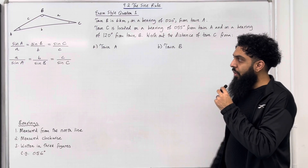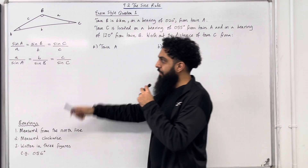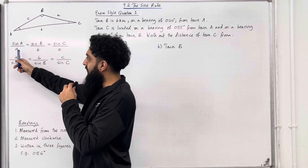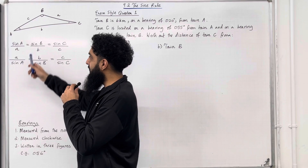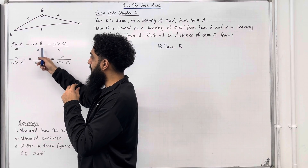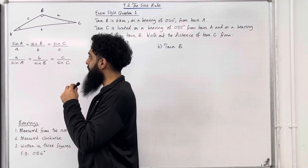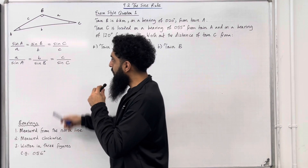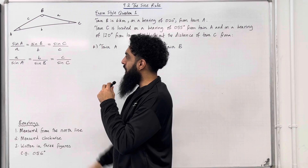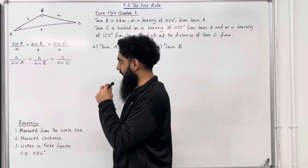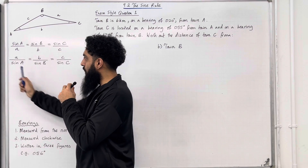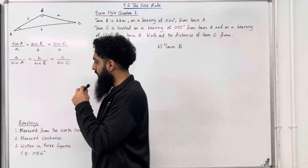The Sine Rule is as follows. Sin A over a is equal to sin B over b, which is also equal to sin C over c. If we take the reciprocal of each side, we get the following result.